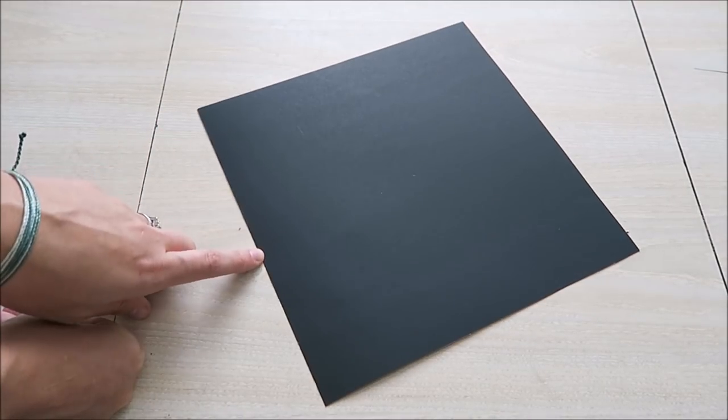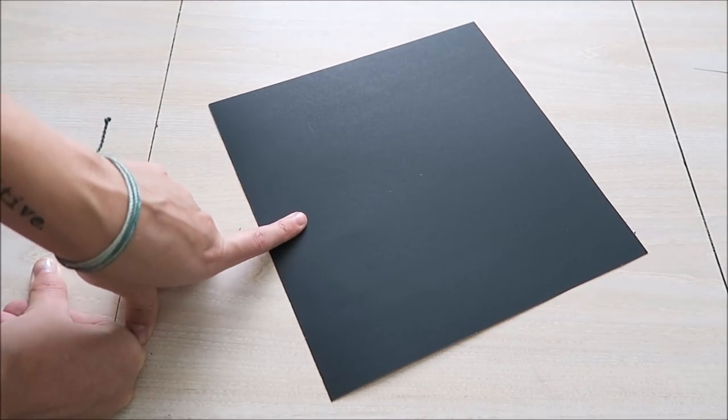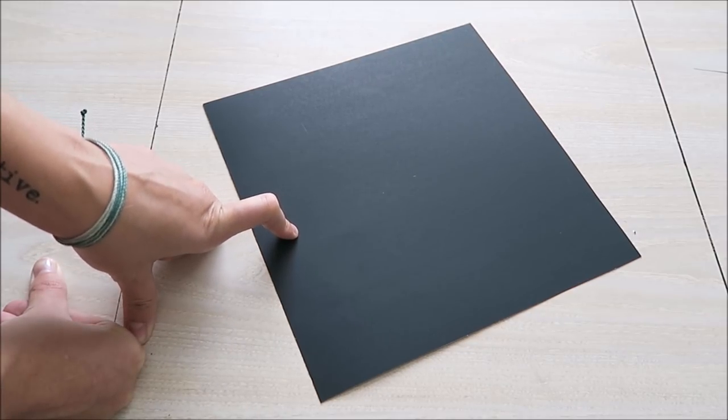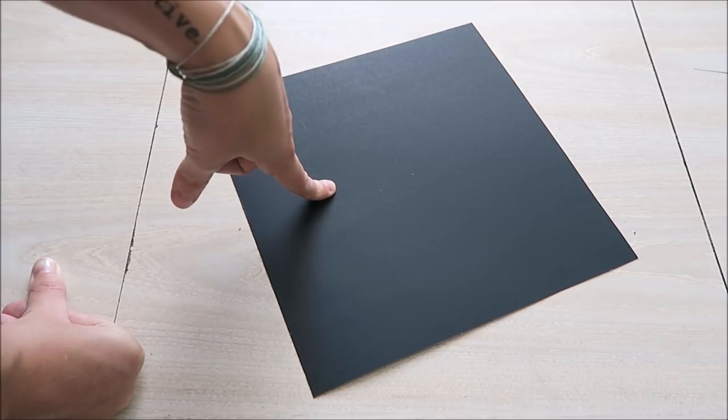While we wait for your hot glue gun to warm up, take your square piece of paper and find the exact center and put your brad or paper fastener through it. And now you're ready to glue.